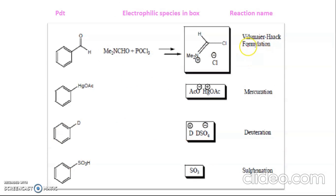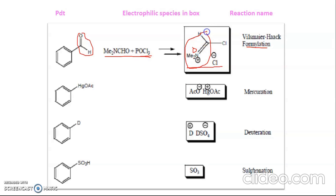We have seen four reactions so far, and some more should be mentioned. Vilsmeier-Haack formylation means a formyl group will be attached. The reagent used is dimethylformamide and POCl3. In the reaction medium, the reactive species is produced, and after hydrolysis there is generation of the oxygen-containing group attached to the benzene ring, followed by several further steps — hence the double arrow indicating multiple steps.